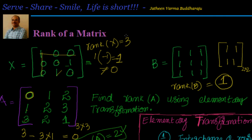In the next session we will understand the bigger picture of why rank of a matrix needs to be calculated. We will also look into the consistency of a system of equations and its meaning, and then move towards solving systems of linear equations of the form a1x + b1y + c1z = d1, a2x + b2y + c2z = d2, a3x + b3y + c3z = d3. There are a couple of matrix methods we will go through in detail. Thanks for visiting, bye for now.